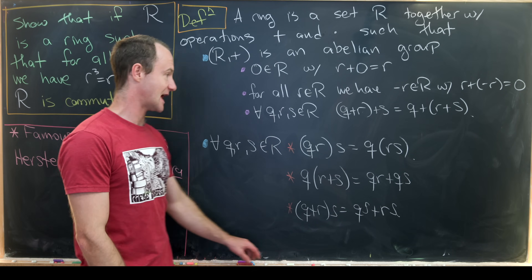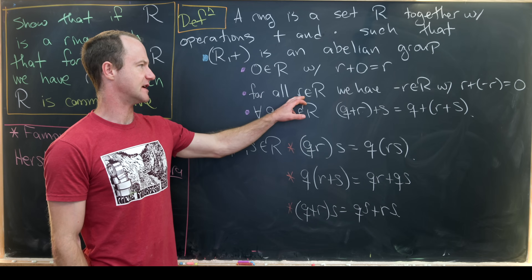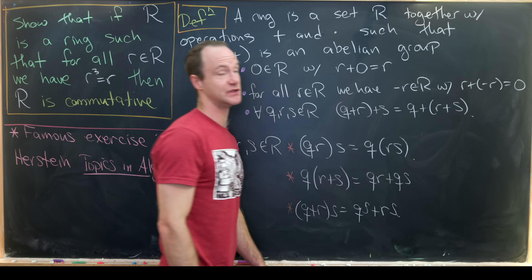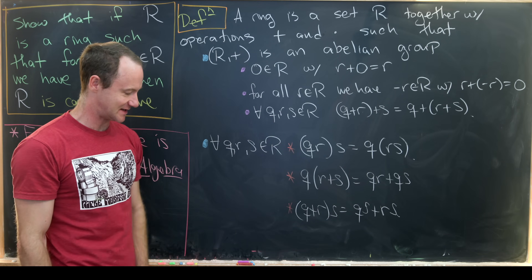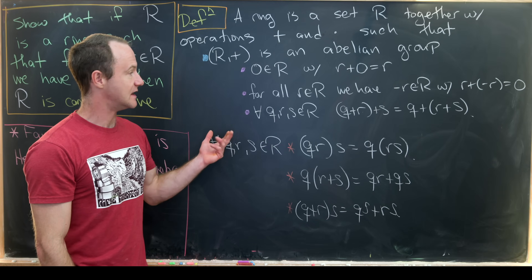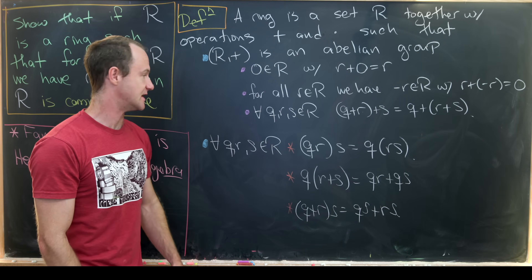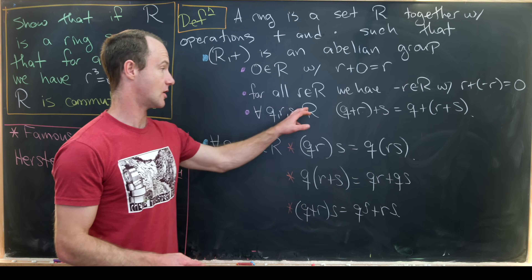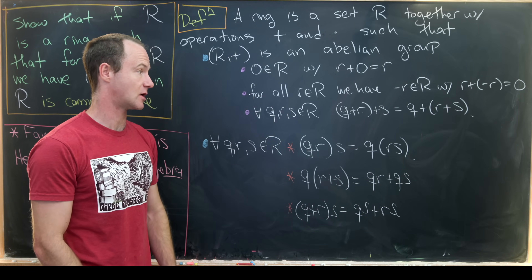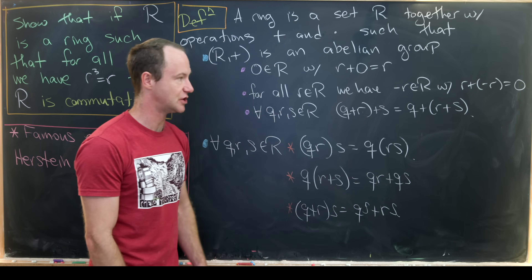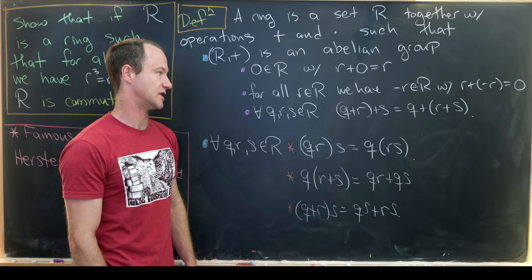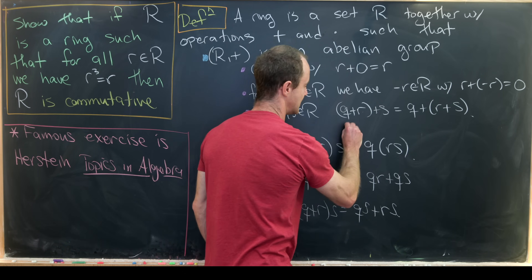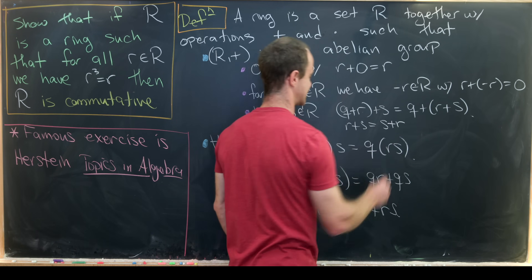We know that everything has an additive inverse: if r is in R, then minus r is in R, and adding them gives zero. We also have associativity of addition: for all q, r, and s in R, we have (q + r) + s equals q + (r + s). And this being an abelian group means r + s equals s + r.